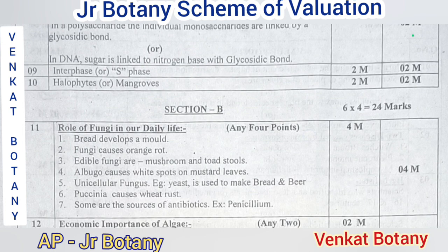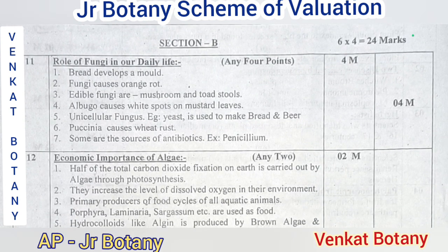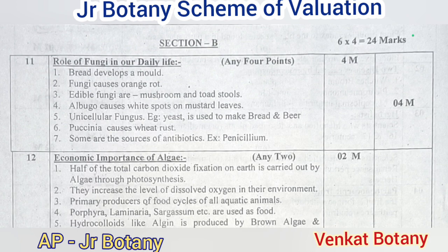Now we have a very short answer question: write the role of fungi in our daily life. Bread develops a mold. Fungi grow on oranges and vegetables. Vegetable fungi include mushrooms and toadstools. We have white spores on mustard leaves. Seeds are used to make bread and beer. Penicillium is an example of fungi with antibiotic properties. These seven points are considered as four marks.